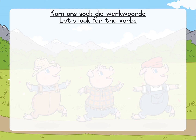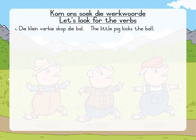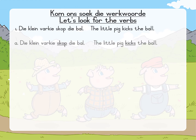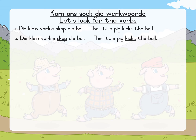Kom ons soek die werkwoorde. Let's look for the verbs. I'm going to give you a few sentences. I will read it in Afrikaans and in English, and then we will see if we can find the verb in each of those. Die klein varkie skop die bal. The little pig kicks the ball. Now you have to ask yourself: Wat doen die varkie? What is the little pig doing? So skop is ons werkwoord. Kicks is the verb.